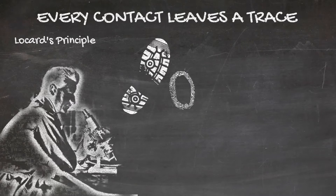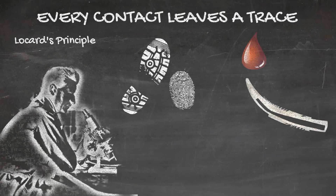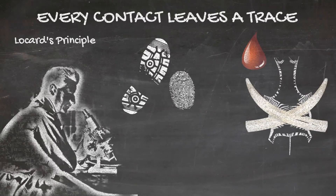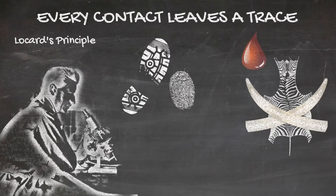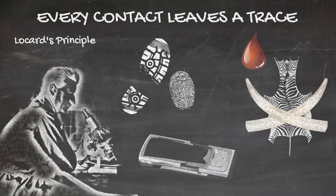This evidence may be an impression or mark, a physical item such as blood, ivory or animal skin, or possibly even something like a digital record such as evidence of a phone call.